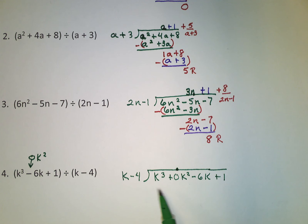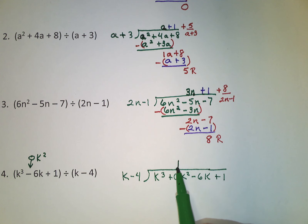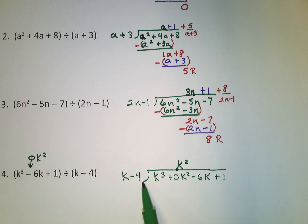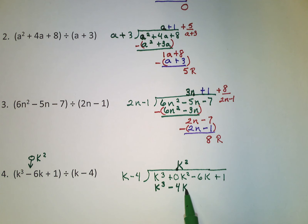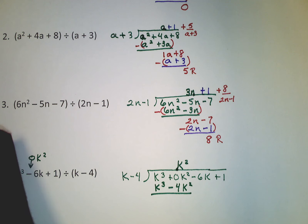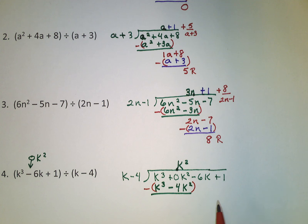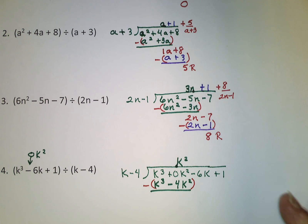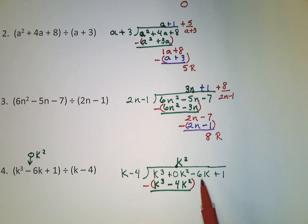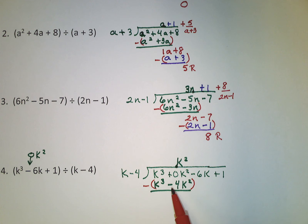What do we multiply times k to get k cubed? That's k squared. Now k squared gets multiplied times the whole divisor: k squared times k gives k cubed, and k squared times negative 4 gives negative 4k squared. Then we subtract. More people make mistakes in the subtraction than any other part of this process — even back in fourth grade — so be careful. The k cubed terms cancel out. Zero minus negative 4k squared is like zero plus 4k squared. Bring down the next term.